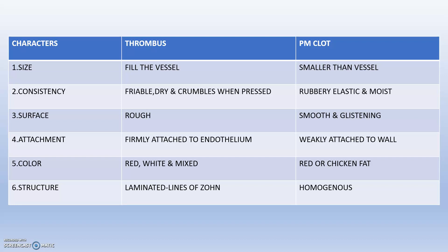The last characteristic is structure. In case of thrombus, they will have a laminated structure and will have lines of Zahn. In case of postmortem clot, they will be homogenous. So thank you guys.